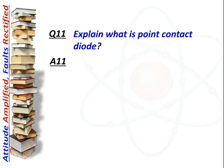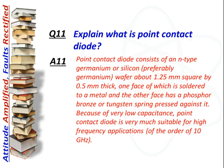Next question: What is a point contact diode? Answer: A point contact diode consists of an n-type germanium or silicon wafer — germanium being most preferred — approximately 1.25 mm square by 0.5 mm thick, one face soldered to a metal and the other face having a phosphor bronze or tungsten spring pressed against it. Due to very low capacitance, it is suitable for high frequency applications up to the order of 10 GHz.